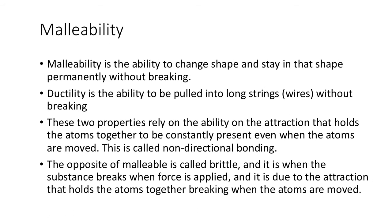Malleability is the ability to change shape and stay in that shape without breaking. So effectively you can bend something and it stays in that new shape. Ductility is the ability to be pulled into long strings, or wires, without breaking. So it's effectively being able to change shape without breaking.